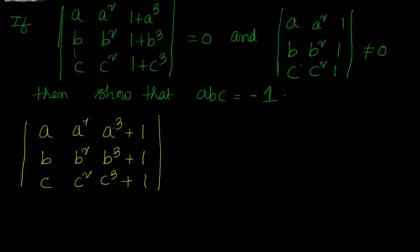If you forget about A³, B³, C³ for a moment, you see that (A, A², B, B², C, C²) is the structure that has been given and told is not equal to 0. Now you know that if you have a determinant like this, you can write it as the sum of two determinants.